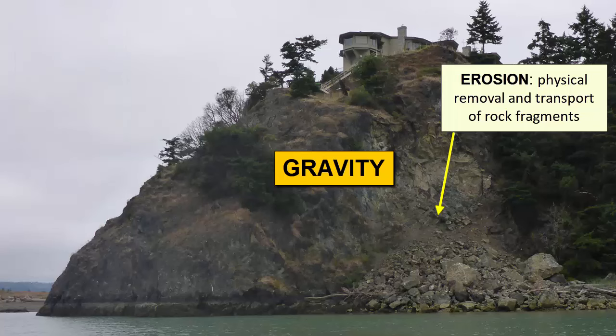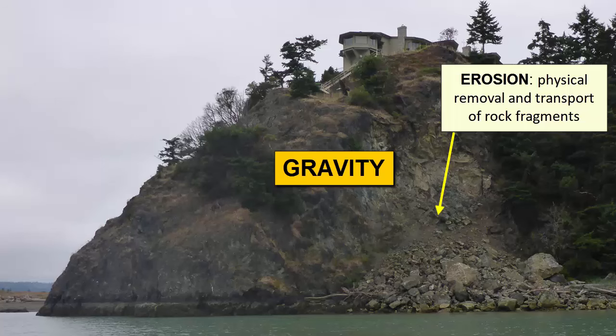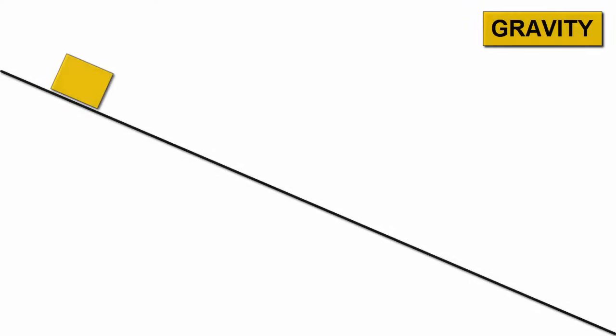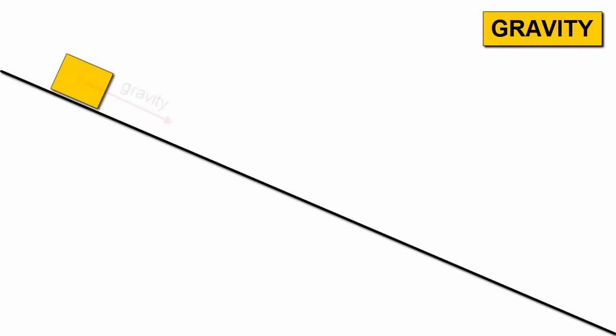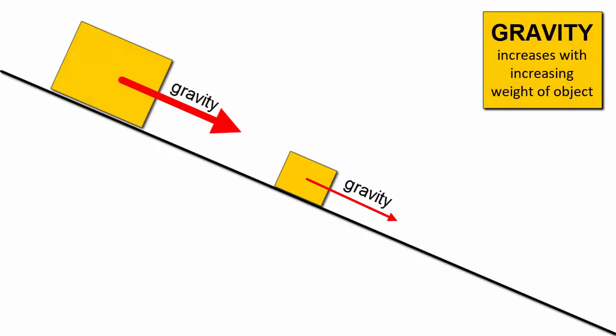Gravity is a force that pulls material downhill towards the center of the Earth. Any object sitting loosely on Earth's surface will feel the pull of gravity, and unimpeded will simply roll or slide downhill. The heavier the object, the greater the force of gravity.